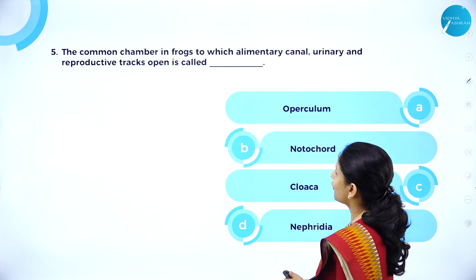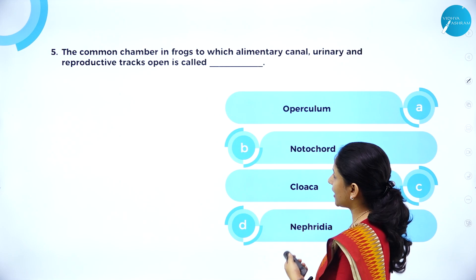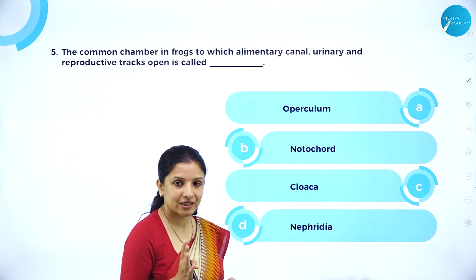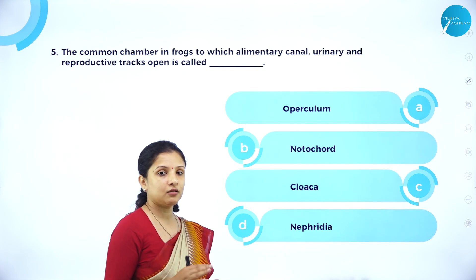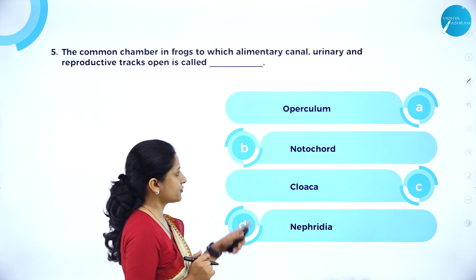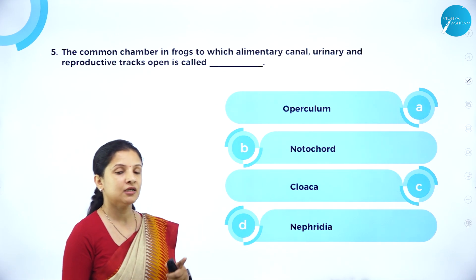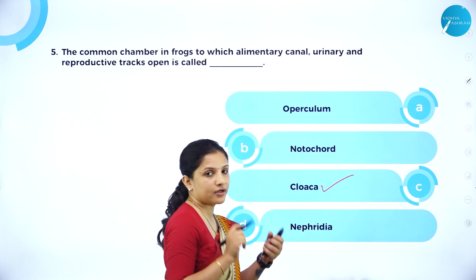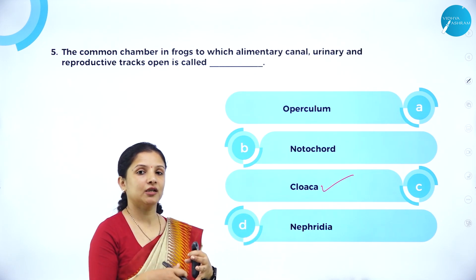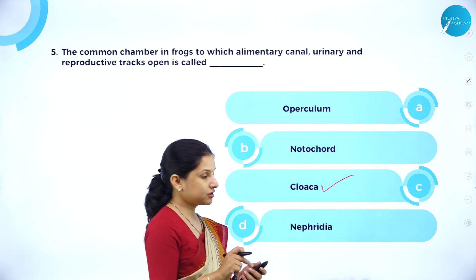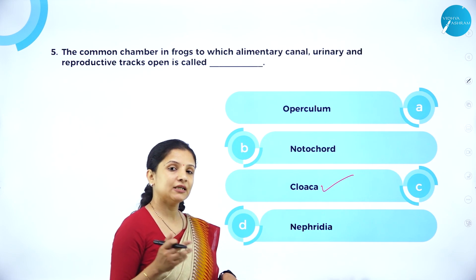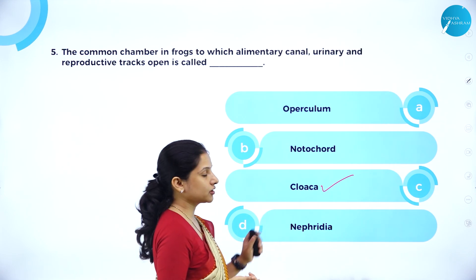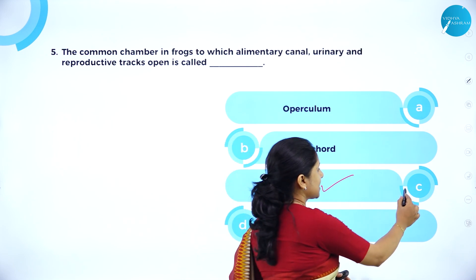Next question: The common chamber in frogs to which the alimentary canal, urinary tract, and reproductive tract open is called — operculum? No, operculum is the covering on the gill slits seen in Osteichthyes. Notochord? No, notochords are present in vertebrates but have nothing to do with this question. Cloaca? Yes — cloaca is the right answer, as that is the chamber into which the reproductive tract, urinary tract, and digestive system all enter. Nephridia? No — nephridia are the excretory units of earthworms in phylum Annelida. The right option is cloaca.